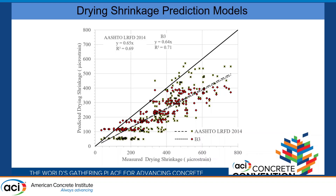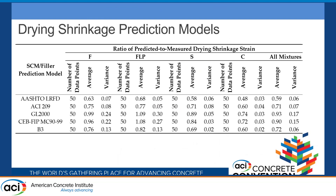Looking at the effect of different supplementary cementitious materials on shrinkage — Class F fly ash, Class F plus limestone powder, slag, and Class C fly ash — the ones with Class C fly ash were significantly higher than the others, with the predicted-to-measured ratio being lower than the rest. Regarding model performance, GL2000 and CEB-FIB were the closest to a ratio of 1.0, providing the best prediction of shrinkage.